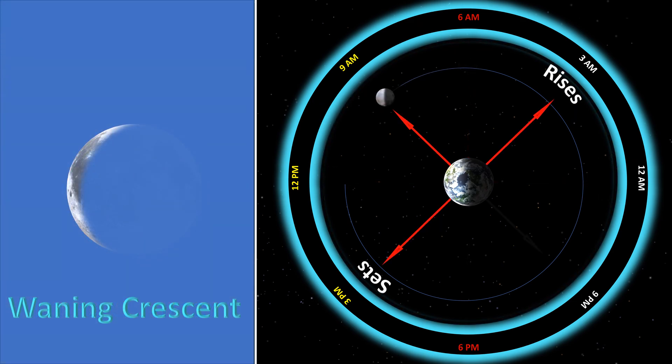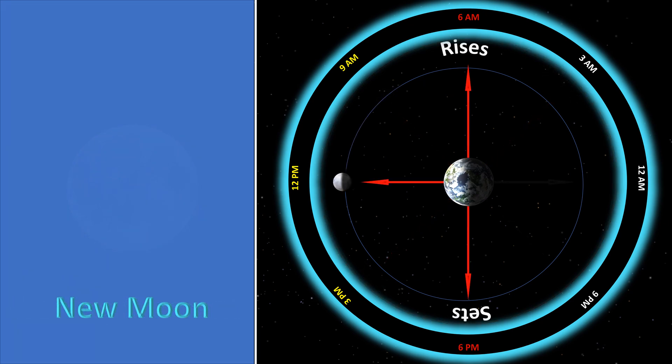The waning crescent moon rises after midnight, transits the meridian after sunrise, and sets in the afternoon. The waning crescent moon will continue to shrink until the new moon, and then the cycle repeats. I hope you enjoyed this episode — thank you for watching.